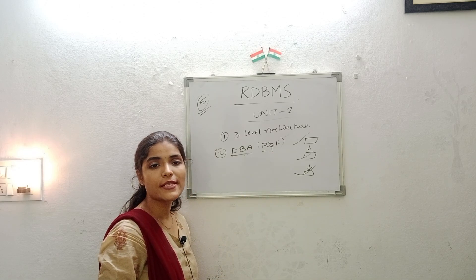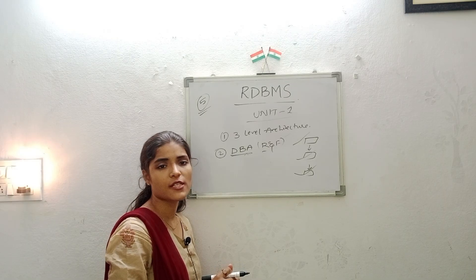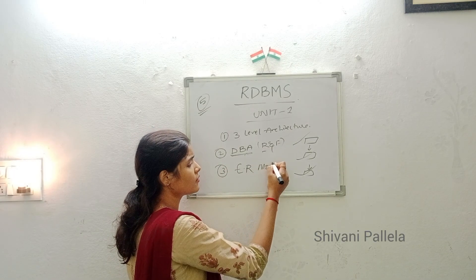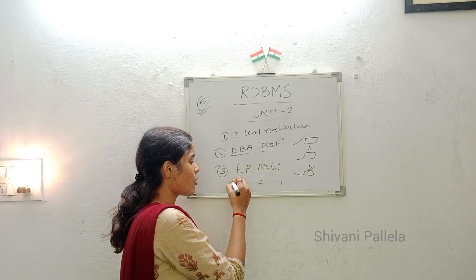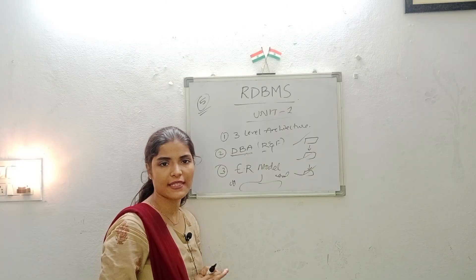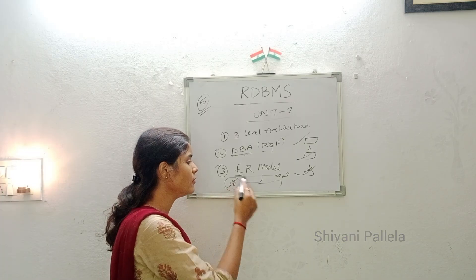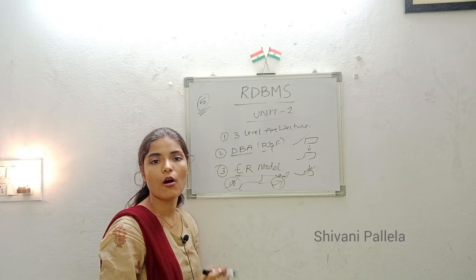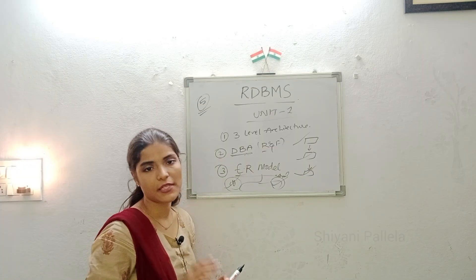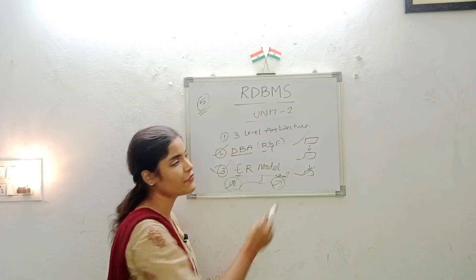In RDBMS, there is no need to learn separate short questions if you are perfect with the long questions — you can easily attempt short questions as well. The third important question is the ER model. There are two types of ER model questions: a college database and a student database. They will ask you to define the ER model and explain it with a suitable diagram — either a student database or a college database. Sometimes they will ask specifically about the college database, so be prepared for both.